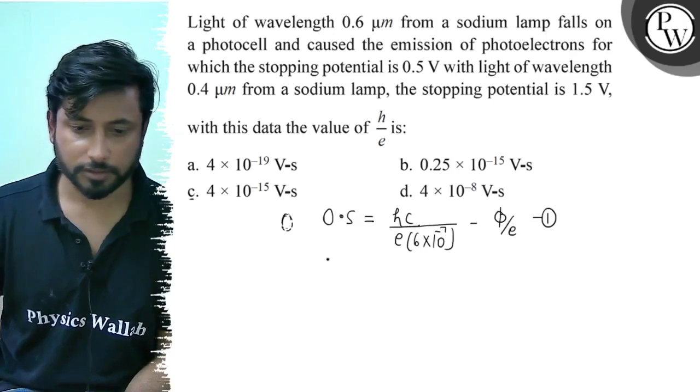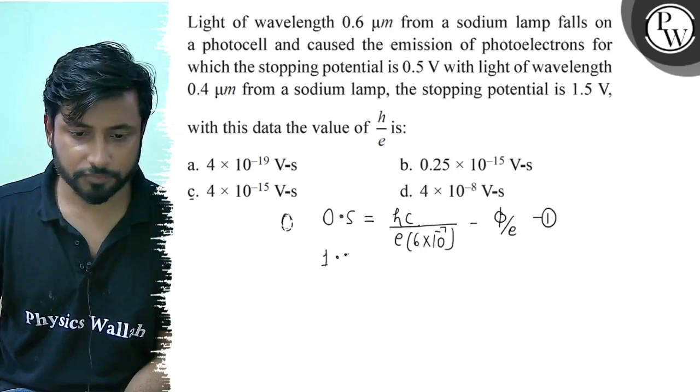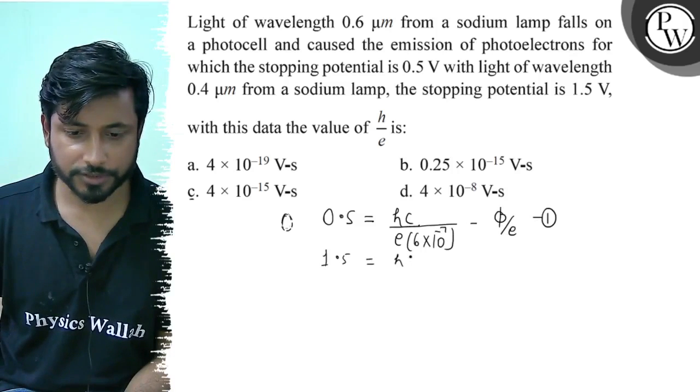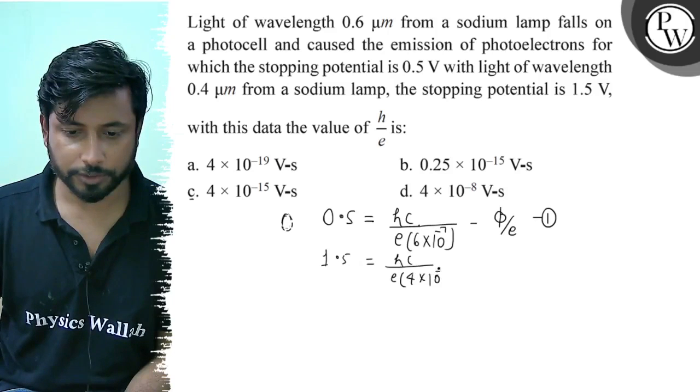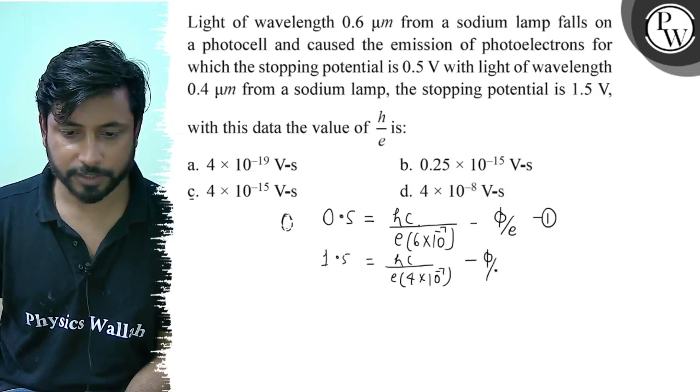This is equation 1. Equation 2, 1.5 equals to hc by e lambda, 0.4 into 10 to the power minus 7 minus phi by e.